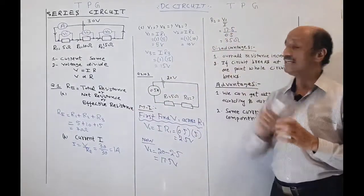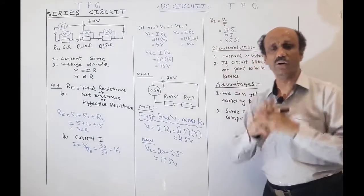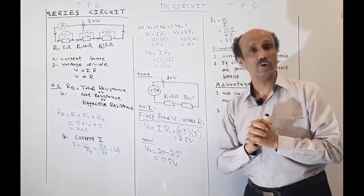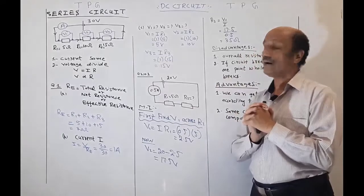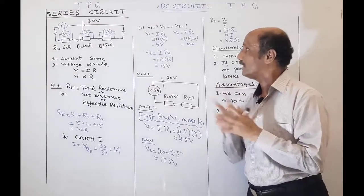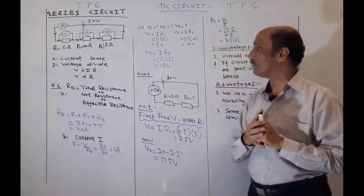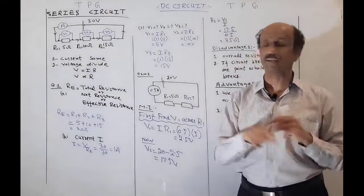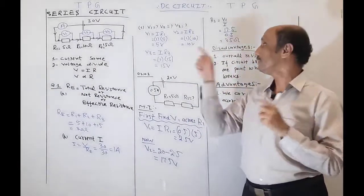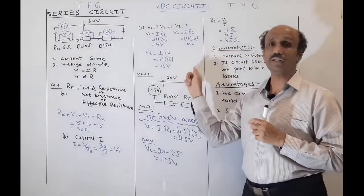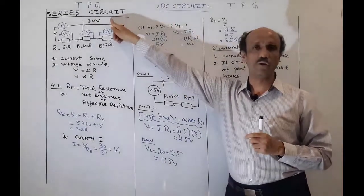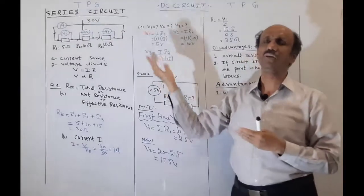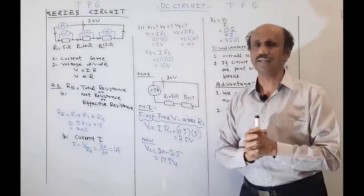To calculate the voltage across each resistor, use Ohm's law: V1 = I × R1, V2 = I × R2, V3 = I × R3. This gives V1 = 5 V, V2 = 10 V, and V3 = 15 V. To verify, add them: 5 + 10 + 15 = 30 V, which equals the source voltage — confirming the answer is correct.